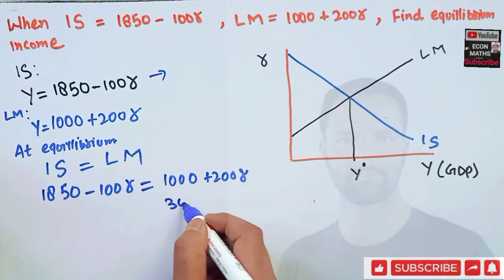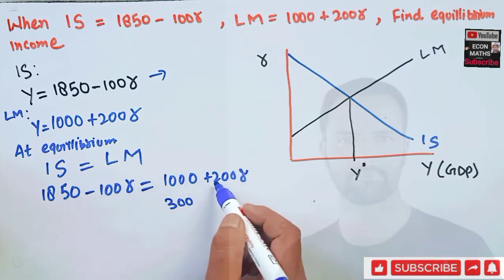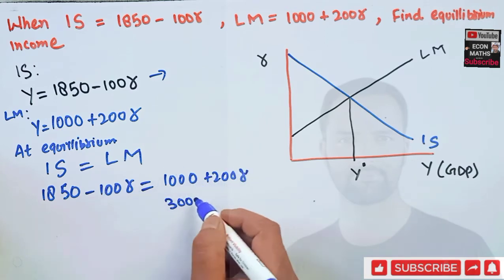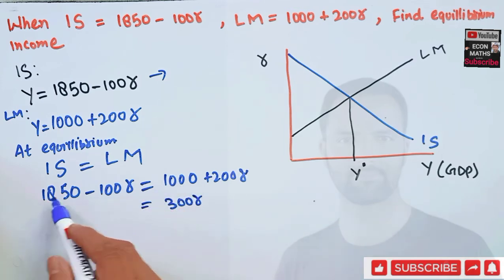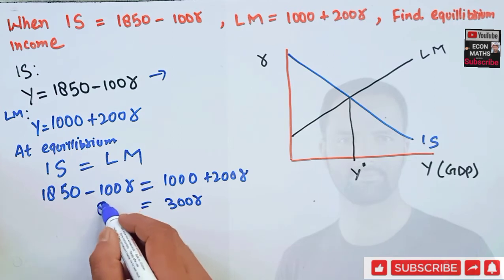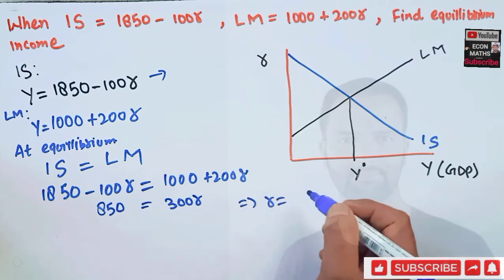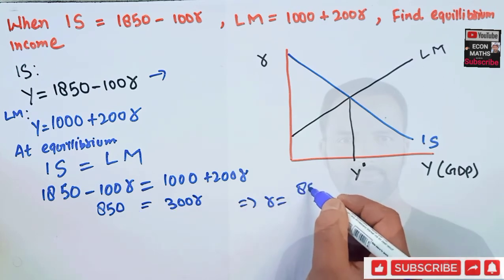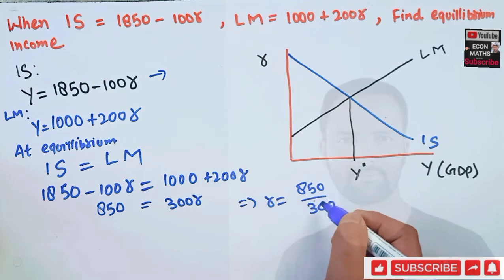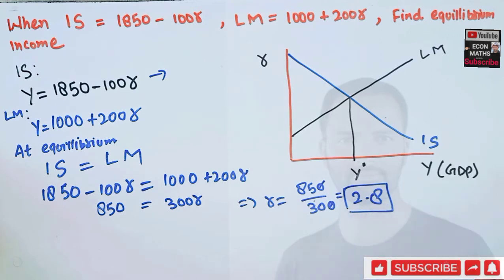Transposing, 100R moves to the right to become positive 200R, so 200R plus 100R equals 300R, which equals 1850 minus 1000, which is 850. Our equilibrium rate of interest R equals 850 divided by 300.